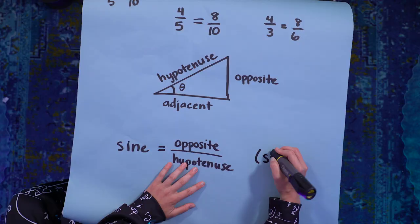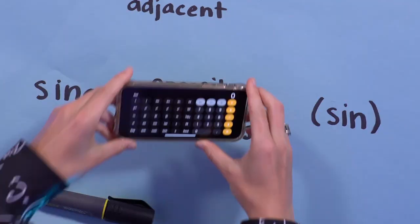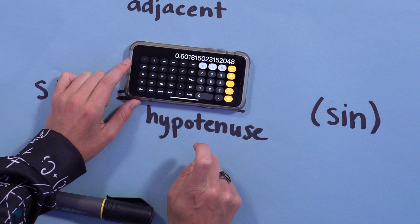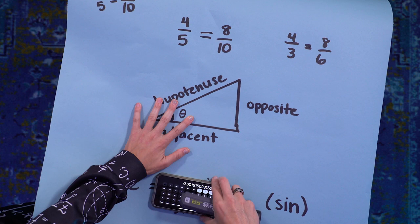And sine is usually written like sin. There's even a sine button on your calculator. Try it. Grab your calculator. Make sure that it's set to degrees and not radians. And punch in 37, then hit sine. You'll get 0.6, or about 0.6. That's the ratio of the opposite side to the hypotenuse of a right triangle with the angle theta set to 37 degrees.